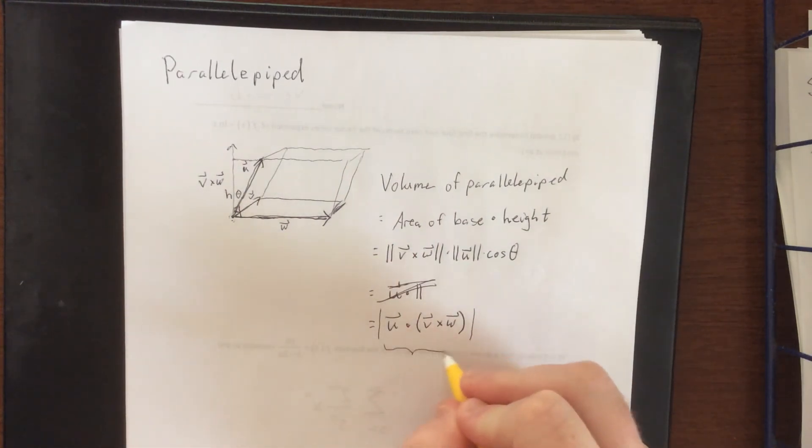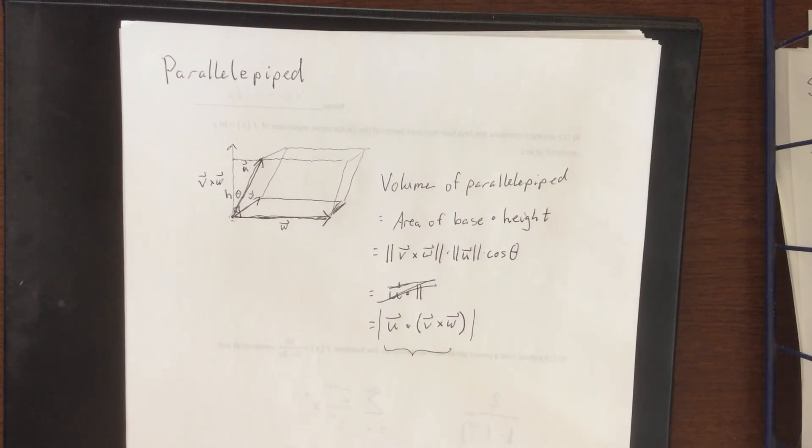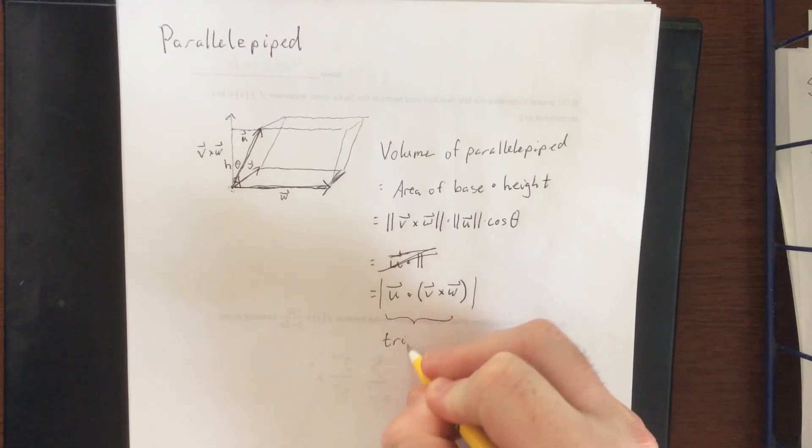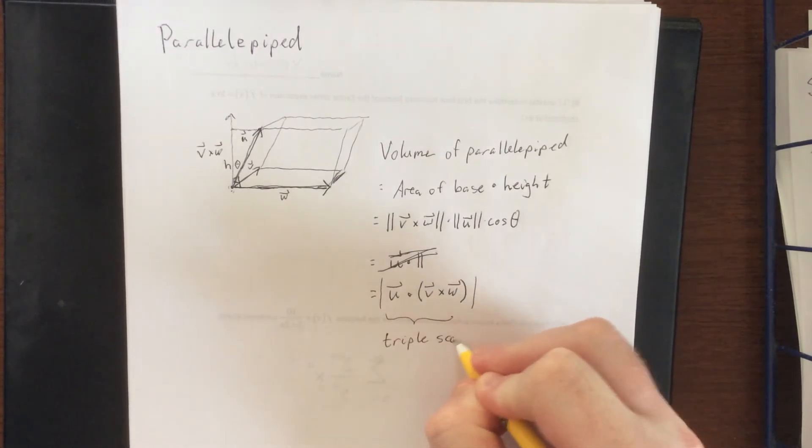Now this guy in here does have a special name, as I've referred to in one of the previous videos. This is referred to as the triple scalar product.